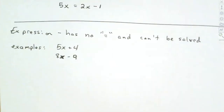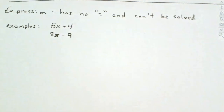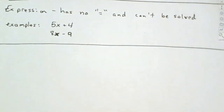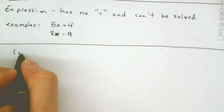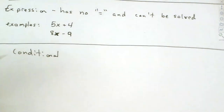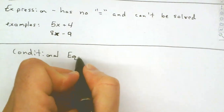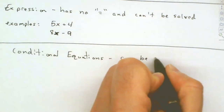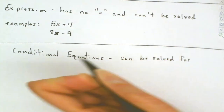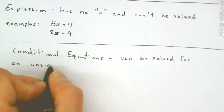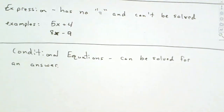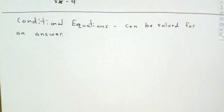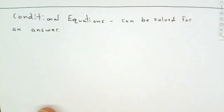In the first chapter, we're going to focus primarily on equations, and there are three basic types. We're going to start with the first type, called conditional equations. Conditional equations can be solved for an answer. I try to put definitions in words you can understand, so: conditional equations are equations that we can solve for an answer.